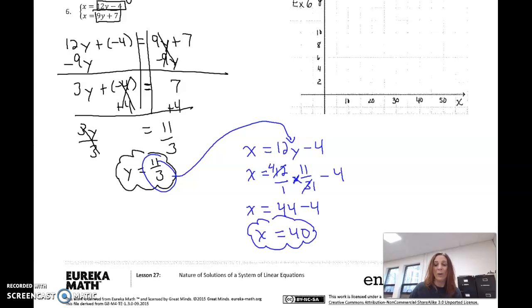And we get x equals 4 times 11 over 1. So that's 44 minus 4. So x equals 40. So we have one solution here. I was able to find it, 40 and 11 over 3, whatever that is. I think it's a repeating decimal. Just want to introduce you to that. But again, our focus is on the types of solutions.